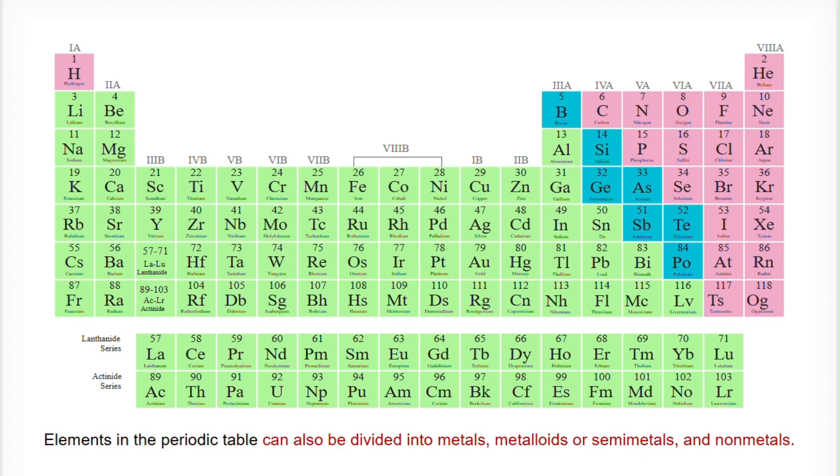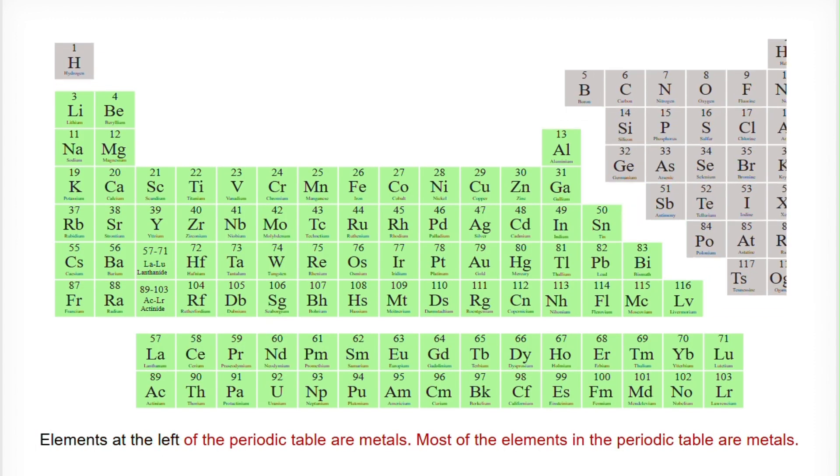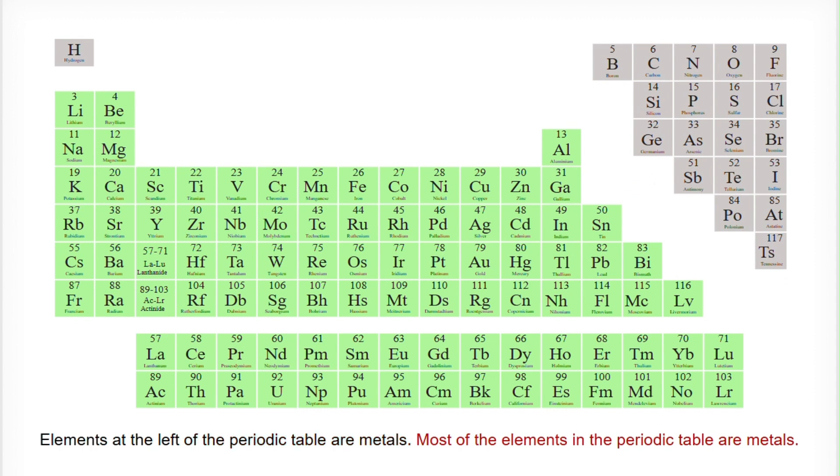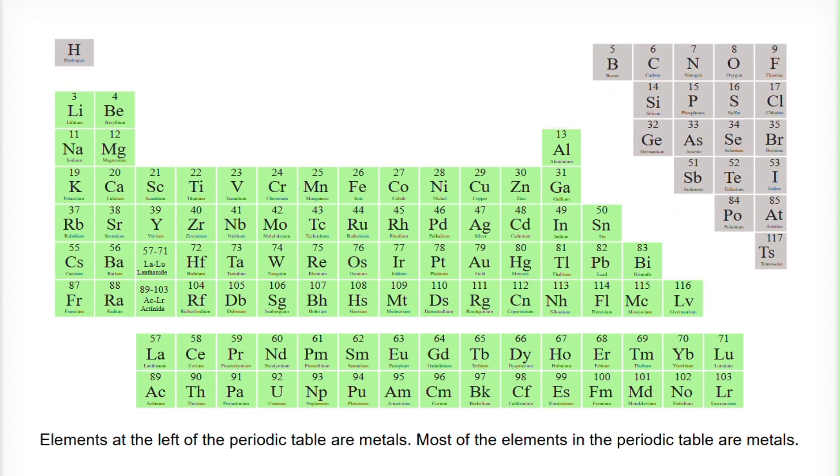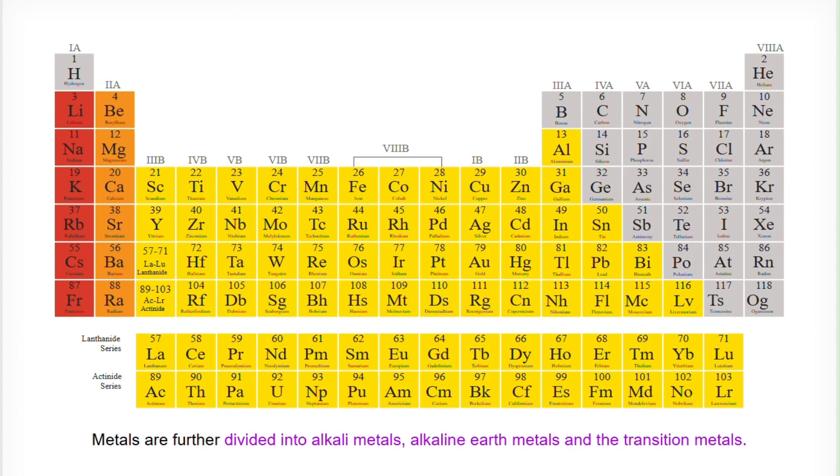Elements in the periodic table can also be divided into metals, metalloids or semi-metals and non-metals. Elements at the left of the periodic table are metals. Most of the elements in the periodic table are metals. Metals are further divided into alkali metals, alkaline earth metals and the transition metals.